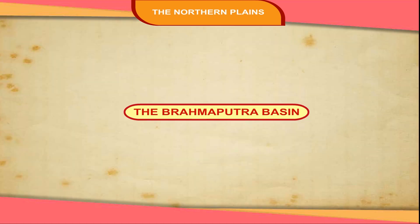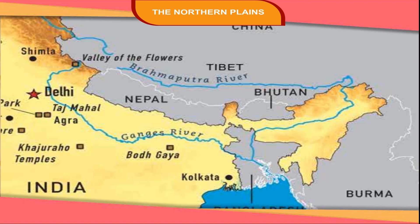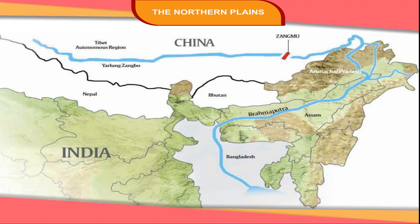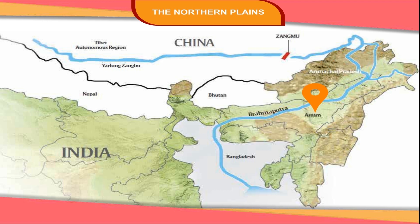The Brahmaputra Basin lies in the eastern part of the northern plains. The origin of the river Brahmaputra is in Tibet, where it is called the Yarlang Zangbo. It enters India through Arunachal Pradesh where it is called the Siang. Then it flows through Assam where it is called Dihang. Finally, it enters Bangladesh where it falls into the Bay of Bengal.